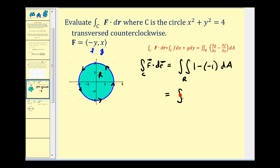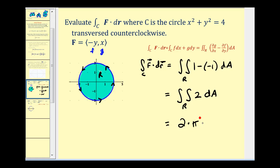So here we just have the double integral over the region of two dA. This is just two times the area of the region. The area of a circle is πr², and the radius here is two, so we'd have π times two squared. That gives us eight pi.